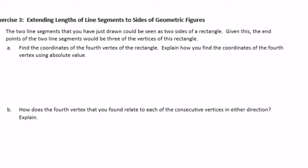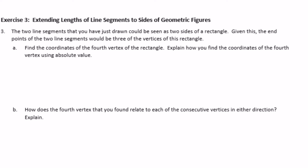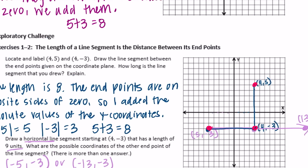Part A: find the coordinates of the fourth vertex of the rectangle. Explain how you find the coordinates using absolute value. For the vertex — I know that opposite sides of a rectangle are the same length. This side we already know is 8. I'm going to count up 1, 2, 3, 4, 5, 6, 7, 8 and plot it right there. So that point is at (negative 5, 5).